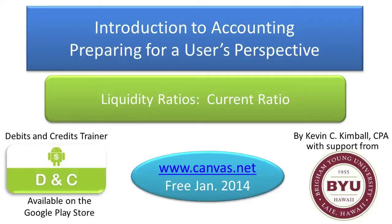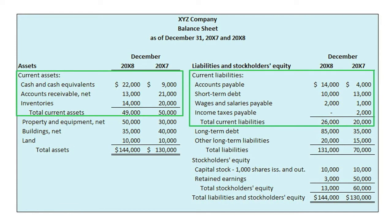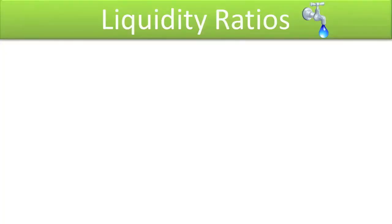Welcome to Introduction to Accounting: Preparing for a User's Perspective. In a prior topic, you learned that classified balance sheets classify assets and liabilities based on their liquidity, with the most liquid assets and the most pressing liabilities placed at the top of the respective account type. Users use classified and comparative balance sheets to compute important liquidity and solvency ratios. The liquidity ratios to be discussed in this topic are listed below.